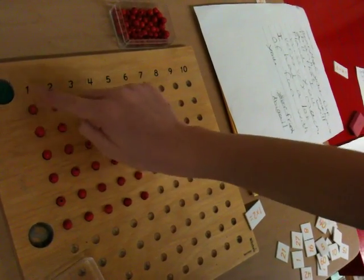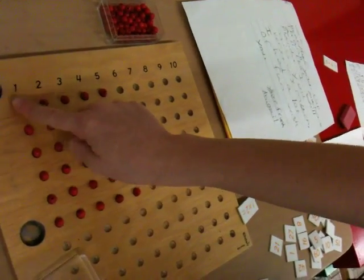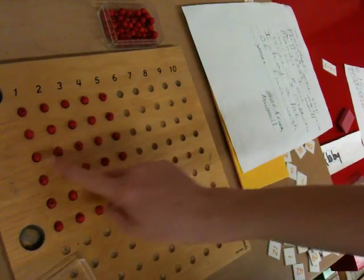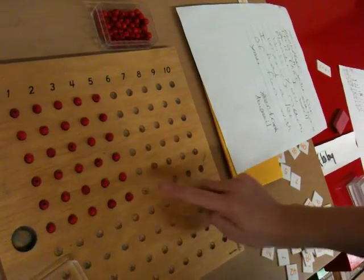One, two, three, four, five. I know that there's five in a row, so five, ten, fifteen, twenty, twenty-five, thirty. It equals thirty because I did it on the multiplication board.